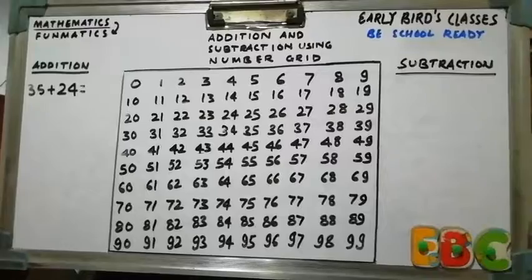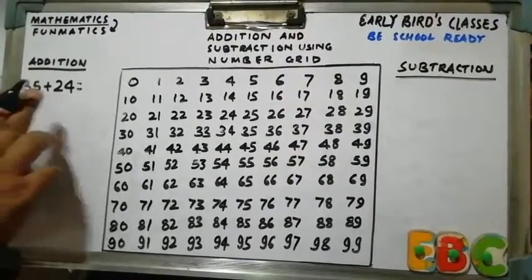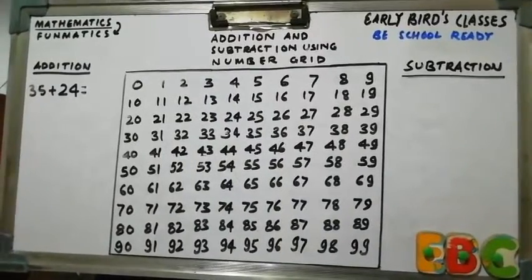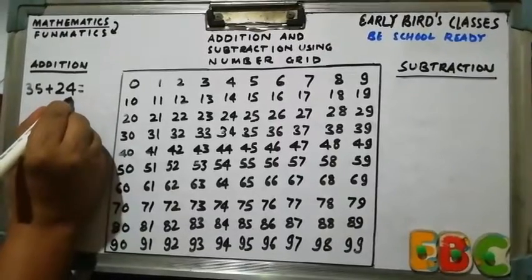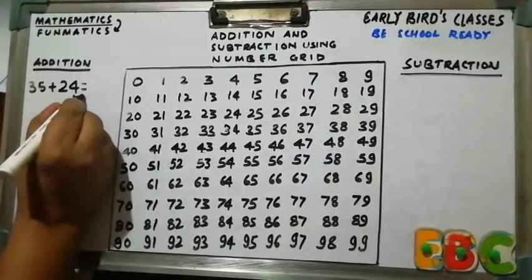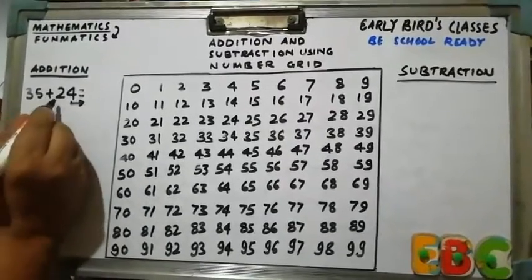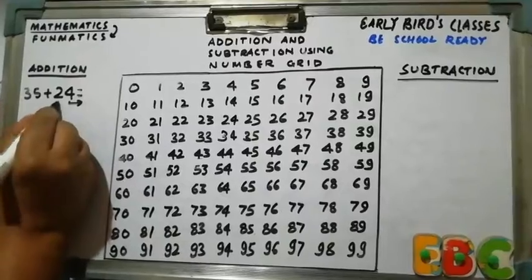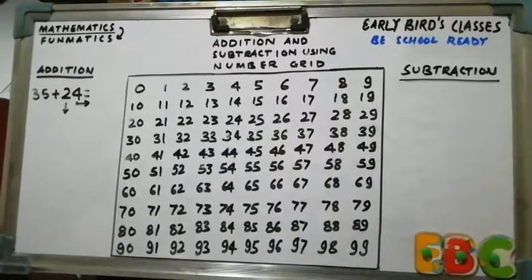35 plus 24. So first what we have to do, we have to locate first number on number grid. And for this units place, we will move towards right horizontally. And for this tens place, we will move vertically downward.